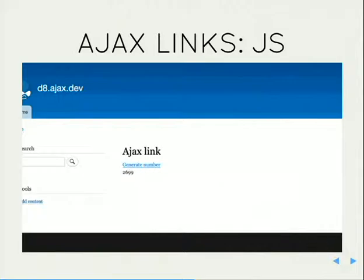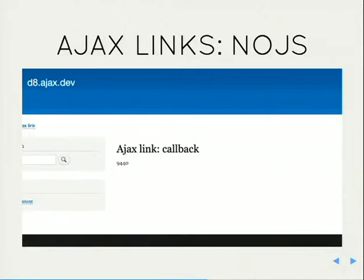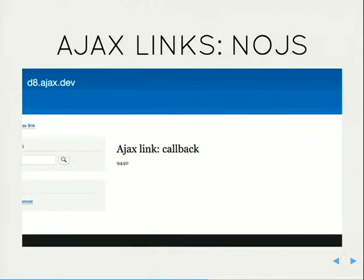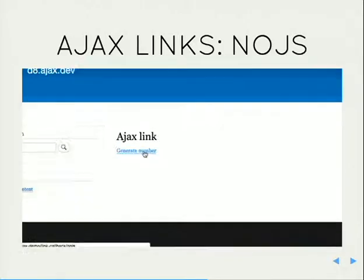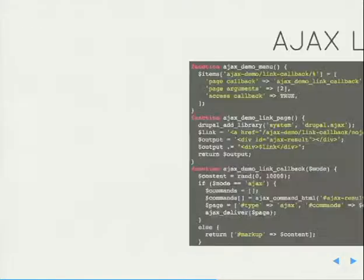Now let's look at other ways to trigger Ajax outside of Form API. The simplest example is a link — each time you click it, a div below gets updated with a number. When you're not using Form API you need to manually add the Ajax library to the page, because Form API normally handles that for you. If you circumvent Form API, you need to make sure Ajax.js is there to do its job.